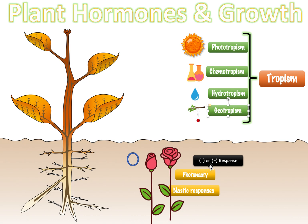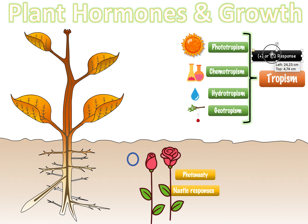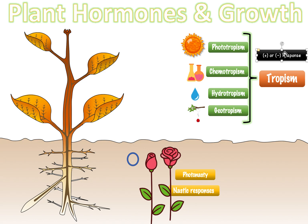Not only does the plant grow towards these things, it can also have a negative response. So it can have both a positive response — meaning it grows towards the stimulus — or a negative response — meaning it grows away from it. For example, sometimes there are chemicals the plant wants to avoid, so it may grow away from them instead. Bear in mind, it can be both positive and negative. If it's positive, the plant wants it; if it's negative, the plant doesn't want it.